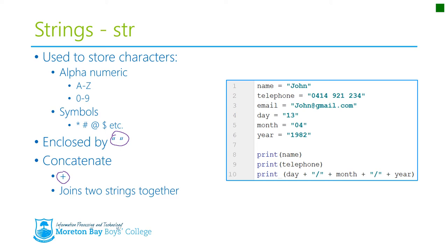So over here on the right hand side, I've got some code that I've typed up that I want you to consider. I've made 6 variables, 6 string variables here, called name, telephone, email, day, month and year. And their subsequent values have also been added in and assigned to them.